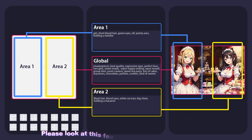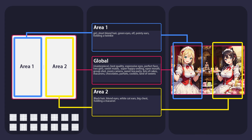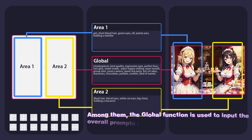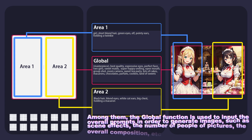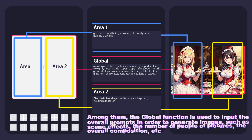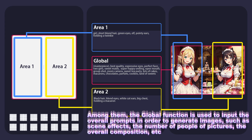Please look at this feature introduction picture first. Among them, the global function is used to input the overall prompts in order to generate images, such as scene effects, the number of people in pictures, the overall composition, etc.